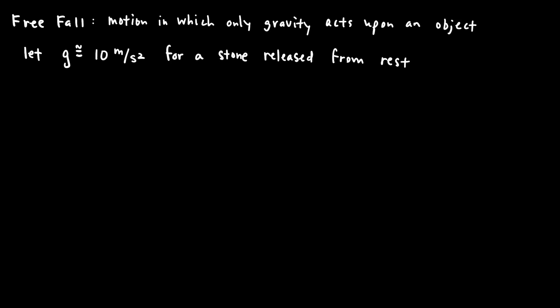Now I'd like to consider what happens to an object as it falls back down. Let's consider motion in which an object is dropped from rest with only gravity acting upon it — this is called free fall. This was also true while the object was going up, but here we're considering downward motion. For simplicity, we'll release the object from rest and approximate g as approximately 10 meters per second squared.